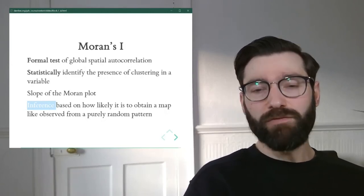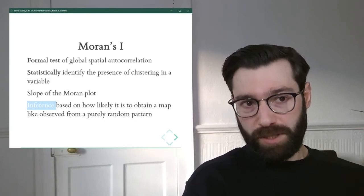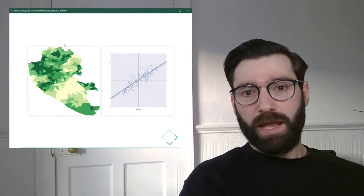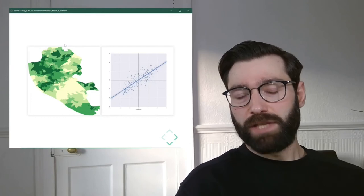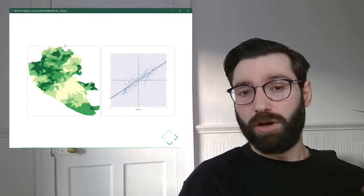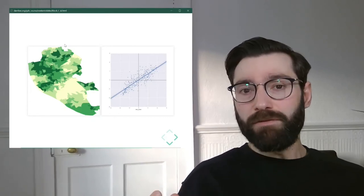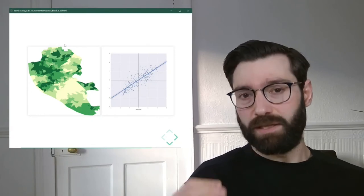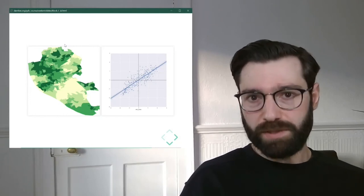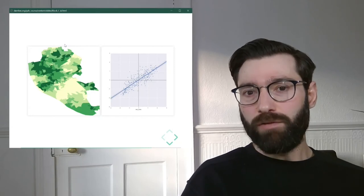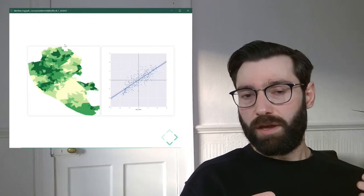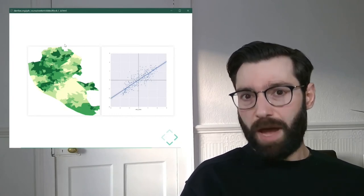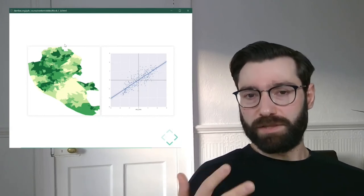In the context of Moran's I, what we're really trying to get at with inference is to find out whether the pattern that we're observing in our data, whether this pattern is compatible with a world in which the values have been located in a random way, or in other words, with complete spatial randomness. If the pattern that we observe is compatible with that, we will say that there is not enough evidence for statistically significant spatial autocorrelation. If we can say that the pattern is not compatible with a spatially random world, we will say that we have good evidence to suggest that there is a statistically significant pattern of spatial autocorrelation.